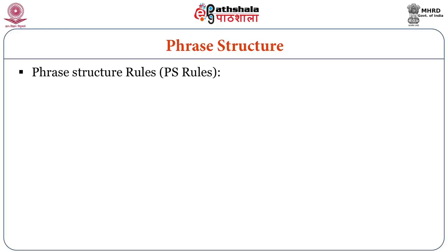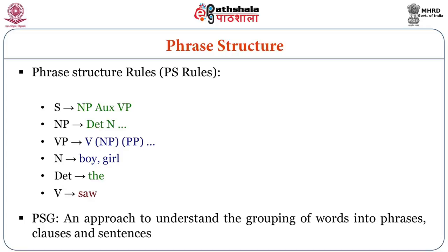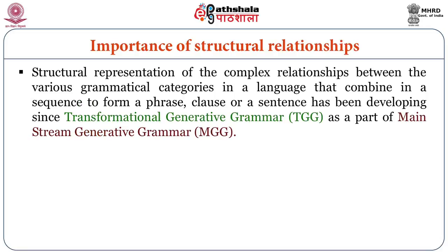What is the phrase structure? Phrase structure rules: S is for sentence where we have NP and VP both. Then NP — we have determiner and noun. An approach to understand the grouping of words into phrases, clauses and sentences. A structural representation of these complex relationships has been developing since transformational generative grammar, that is popularly known as TGG, as a part of mainstream generative grammar, that is known as MGG.